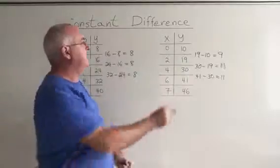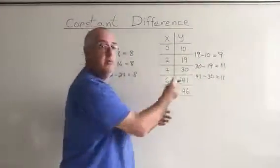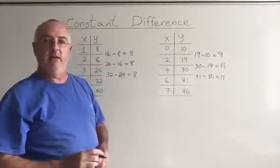Notice that I'm always using two consecutive points in the table when I do my subtractions. If I just choose points at random I'm not going to be able to see the constant difference.